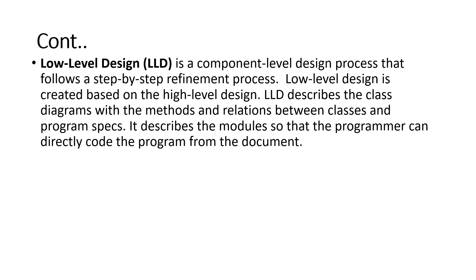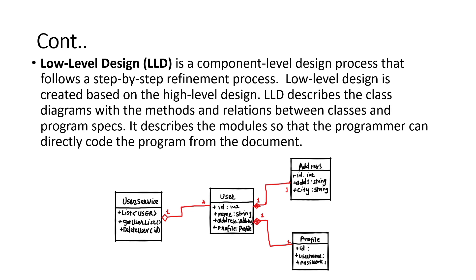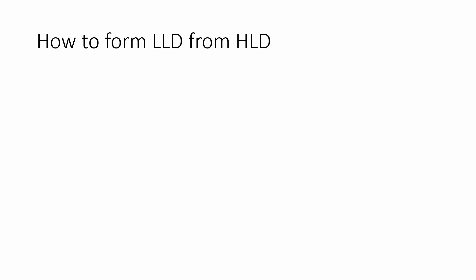Taking our previous user service example — in the HLD we saw different components at a high level. Now if we write down an LLD or a class diagram for that — and a class diagram is one of the diagrams that is part of LLD — it will look like this. We have segregated and defined different entities that can be part of my component: user service, user, and user can have address as well as profile. Different responsibilities are assigned to different entities.